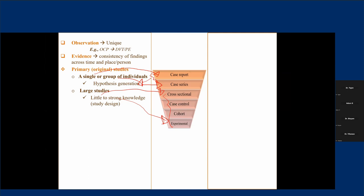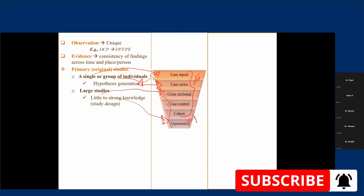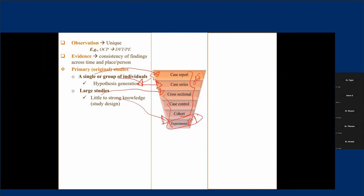Even from primary studies, whenever you conduct an experimental study, your level of evidence contribution is higher than the observational studies. These are the commonly used observational study designs in order of their strength and importance. When we conduct a primary or original study, the level of evidence varies with the study design. In addition to that, there are different factors that affect the credibility of our results — the first is the sampling issue.